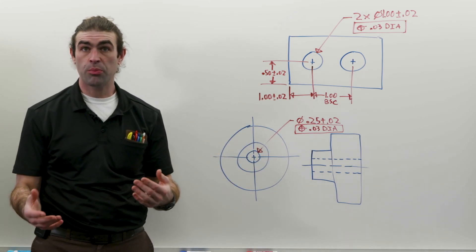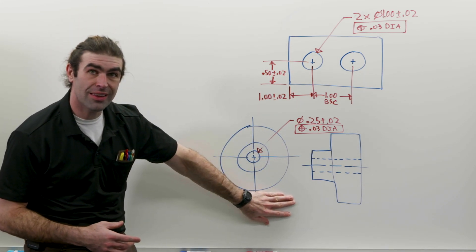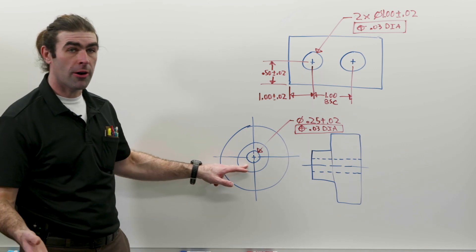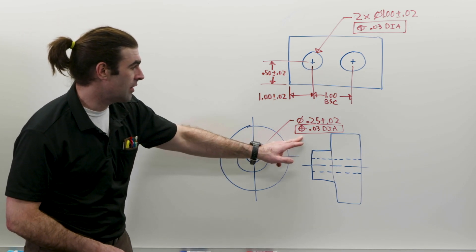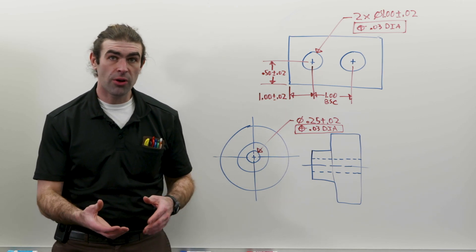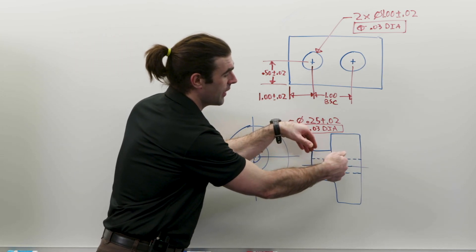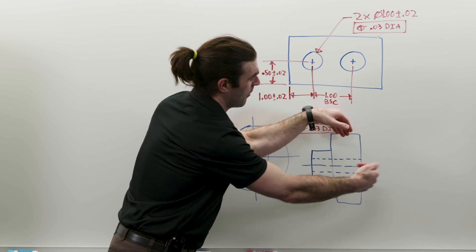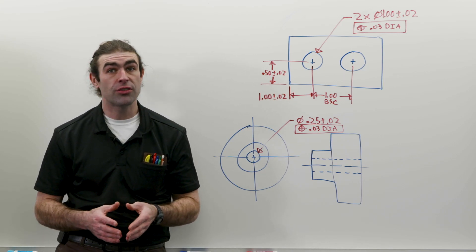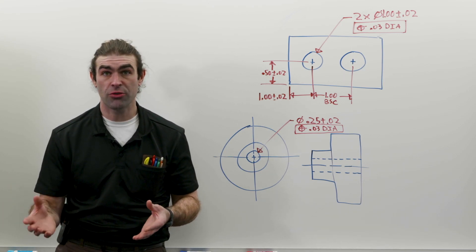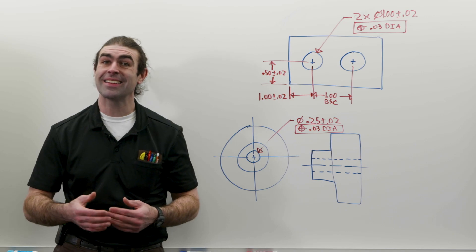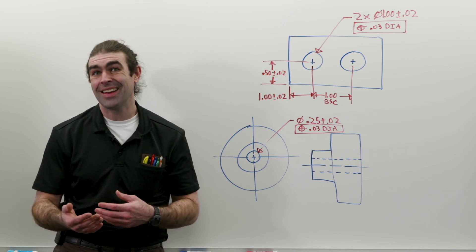Where that system breaks down is if you have a part like this. We've got two diameters with a third diameter as a hole going through the part. We've identified this hole as being positioned with no datum references. When you go to measure this part, you'll get a different result if you capture this diameter and then measure the hole rather than if you capture this diameter and measure the hole. You can't capture both at the same time. This can lead to non-repeatability and measurements depending on how somebody decides to measure the part. That's not going to work, and they discontinued that practice in the 1982 standard.